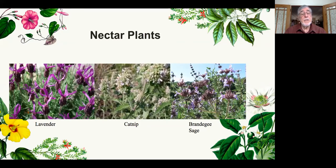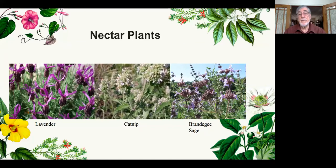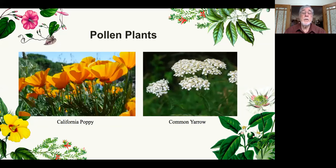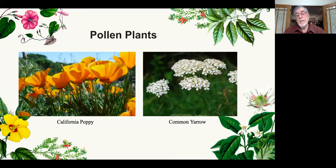Lavenders — bees love lavenders. The one coming on right now called Lavandula Provence is one they really like. They like catnip and they like sages, particularly the Brandegee sage which you can buy at many nurseries. Once again, it's a mixture of natives and non-natives. California poppies are really good for bumblebees and also good for some honeybees, and there are leafcutter bees that like them as well. The common yarrow — Achillea — the yellow variety is much more attractive to bees. Watch and see what the bees are doing; they'll tell you what they like.